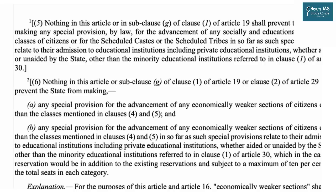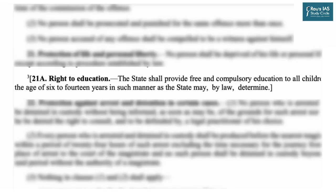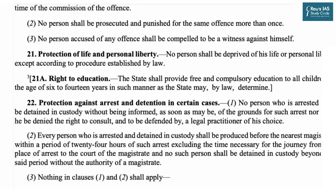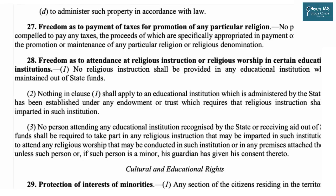Article 21A, inserted by the 86th Constitutional Amendment of 2002, talks about the right to education, where the state shall provide free and compulsory education to all children of the age of 6 to 14 years in such manner as the state may by law determine. A law was subsequently enacted to ensure ground-level implementation of Article 21A. Article 28, although dealing with freedom of religion, also addresses educational institutions regarding freedom of attendance at religious instruction or religious worship.